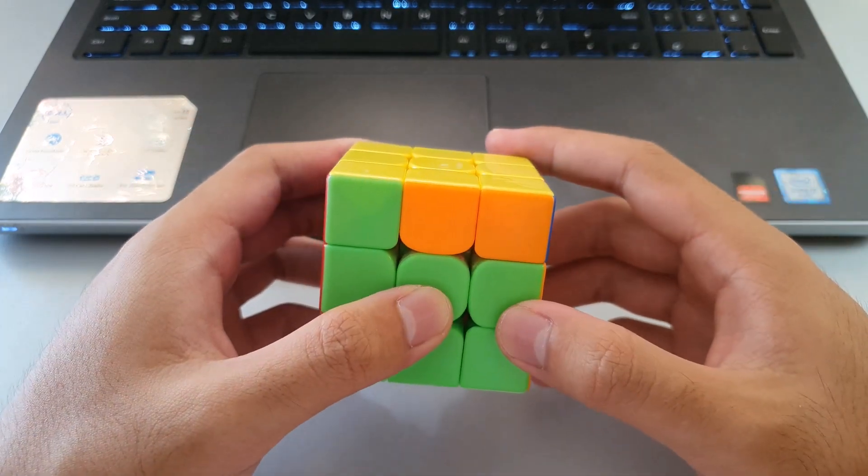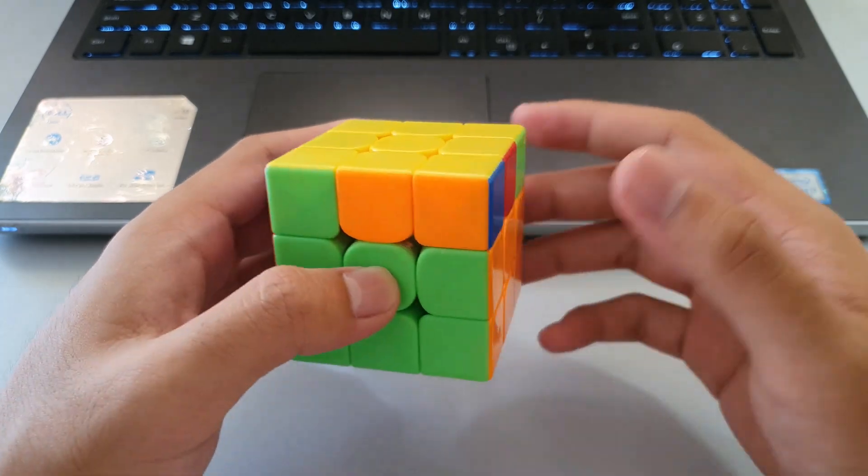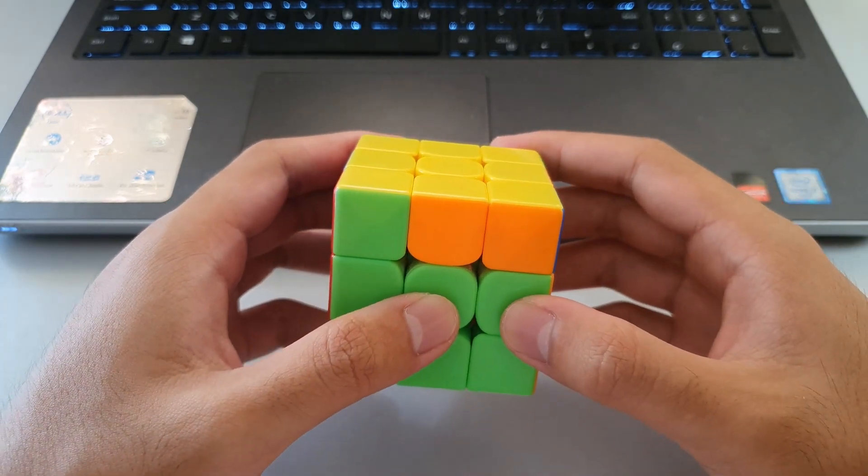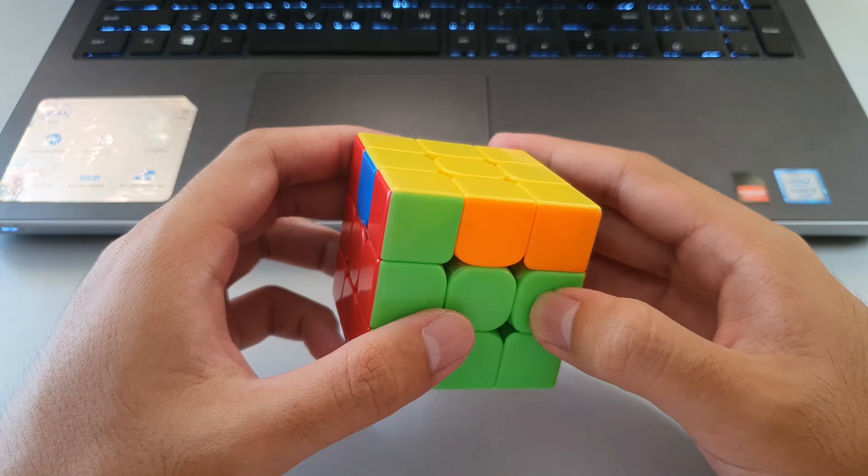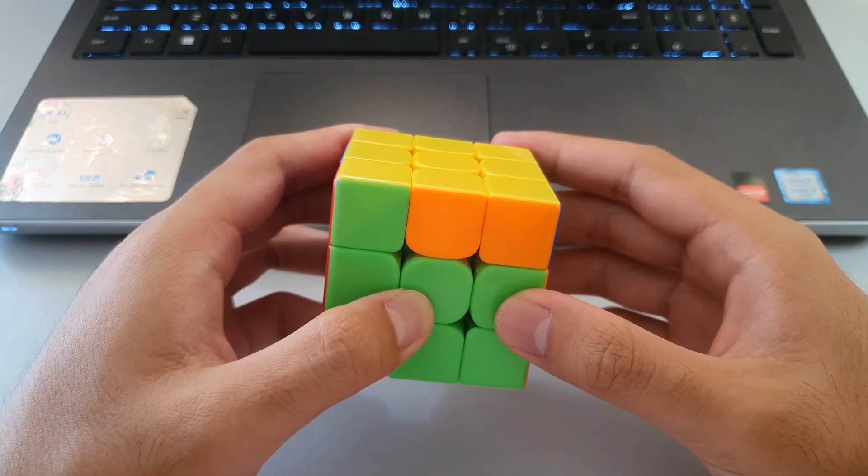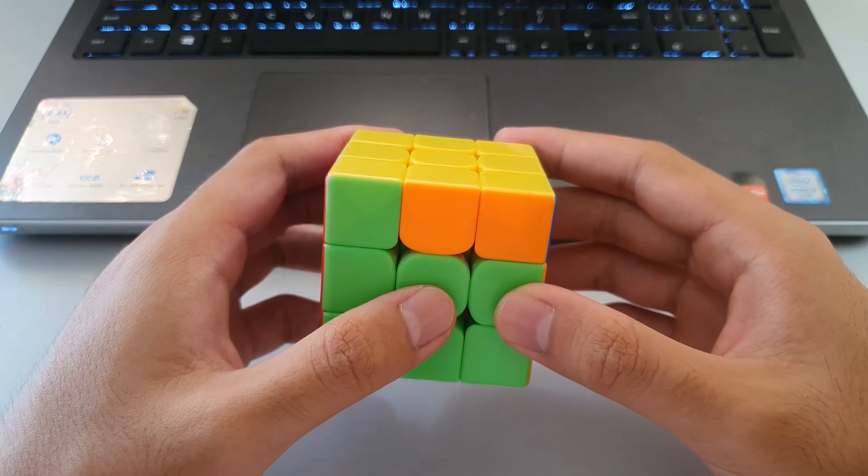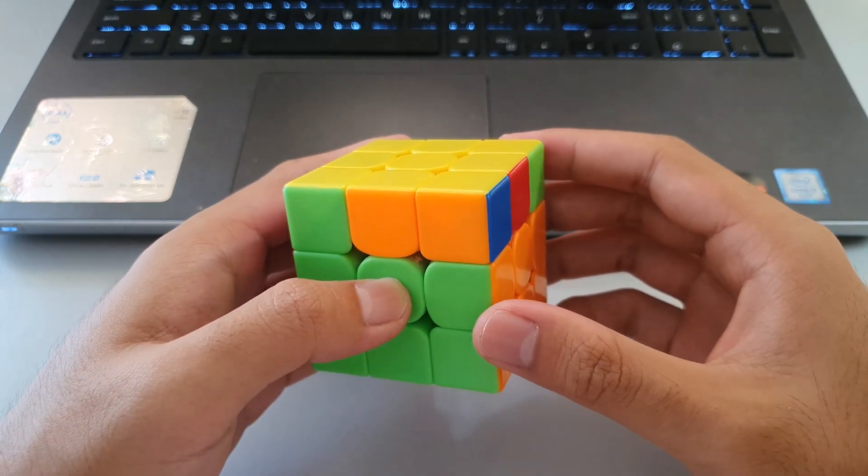The third one is just to practice it a lot. Drill these algorithms. They do pop up quite often. There's four G perms, so they do pop up quite often in solves. It's good to get familiar with them from the beginning.